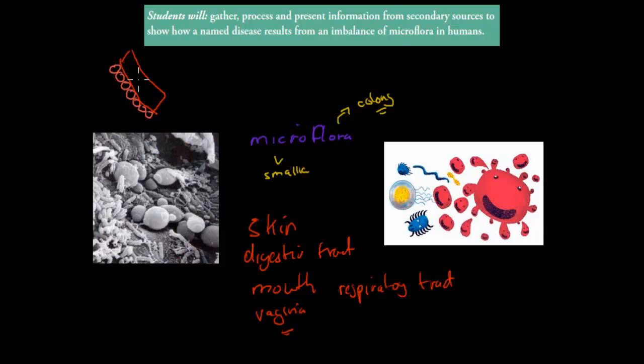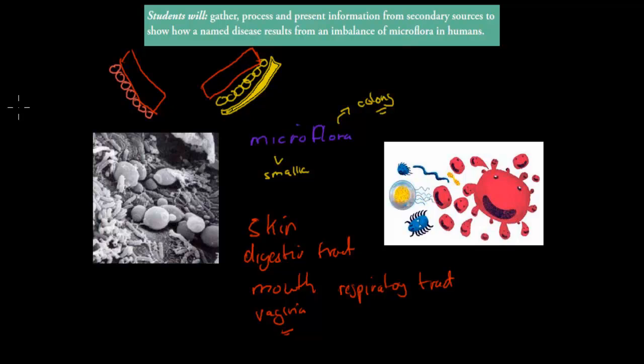If this is the digestive tract, then we usually have some cells sort of beneath it. So these might be our cells. Then we have our blood beneath that as well. But the digestive tract itself is often not considered to be inside our body. It's just, well it is inside our body but not inside our tissue or inside our blood.